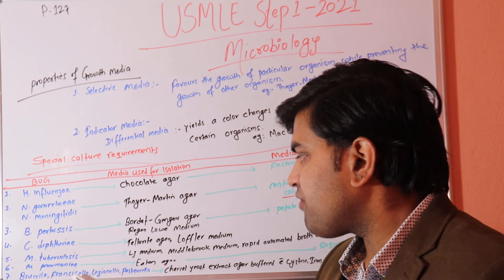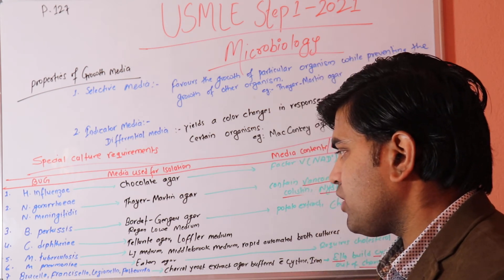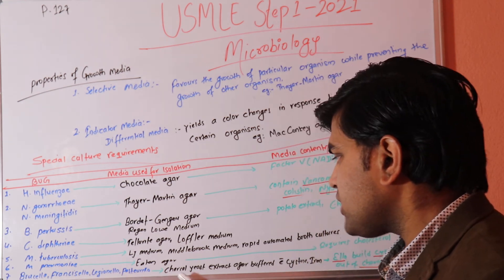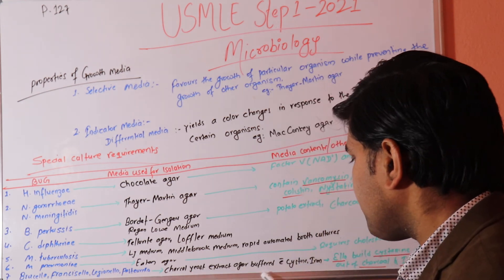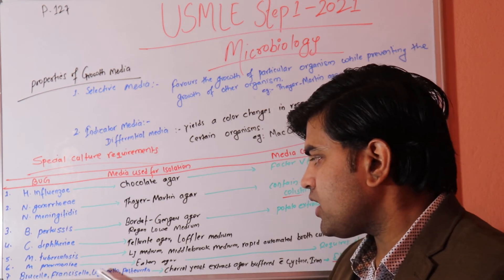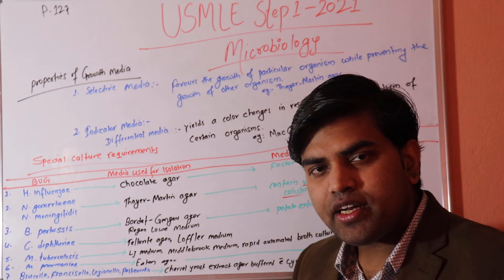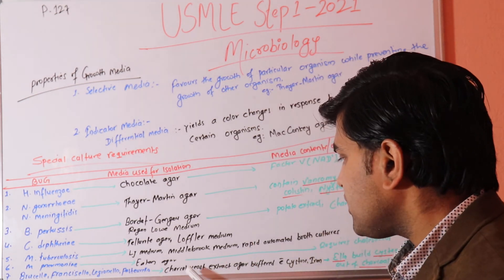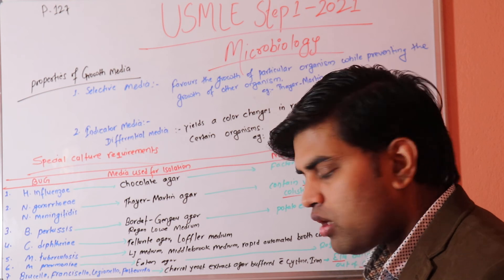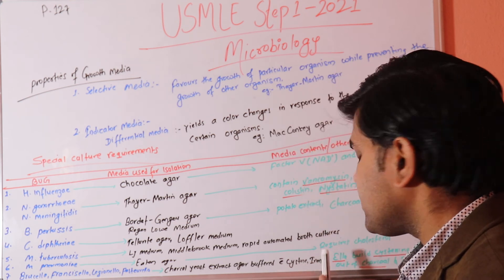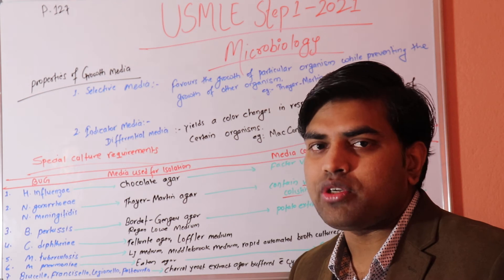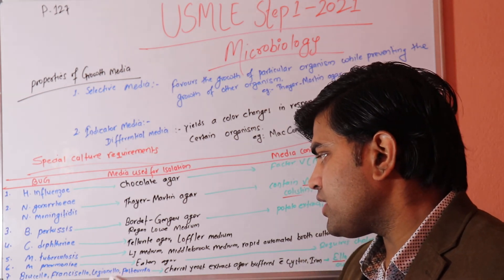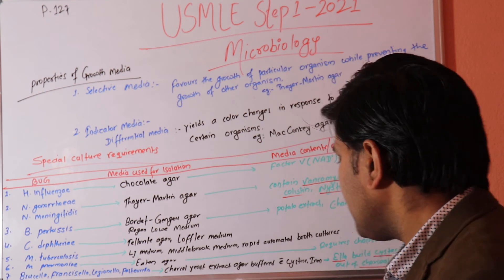Mycoplasma pneumoniae is grown on Eaton agar. The special requirement of this organism is cholesterol — it can only grow in the presence of cholesterol, which is provided in Eaton agar. For the 'ella' group — Brucella, Francisella, Legionella, and Pasteurella — they require charcoal yeast extract agar buffered with cystine and iron.